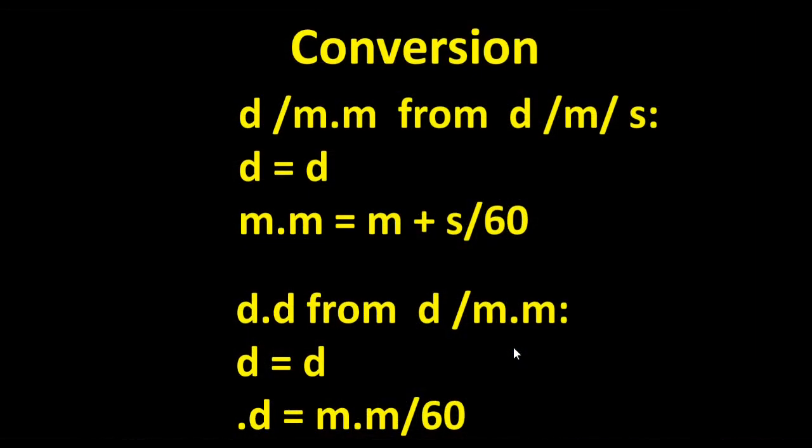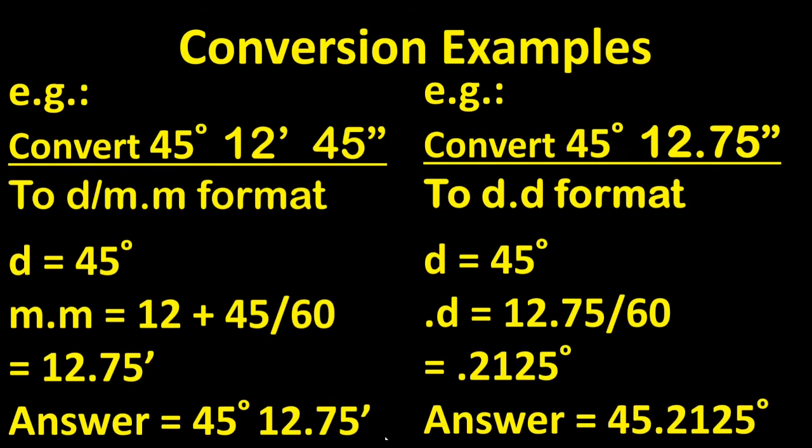It is important to be able to convert the various formats of latitude and longitude on the fly. While there are apps that will do this for you, it is actually a pretty easy process you can do with paper and pencil. Remember, there are 60 minutes in a degree and 60 seconds in a minute. To calculate degrees-decimal minutes from degrees-minutes-seconds, the degree and minute figures remain the same, while the decimal part of the minute is calculated by dividing the number of seconds by 60. Similarly, calculate decimal degrees from degrees-decimal minutes by maintaining the degree figure and calculating the decimal part of the degree by dividing the decimal minute by 60. Use this two-step process to convert degrees-minutes-seconds directly to decimal degrees.